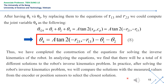In analyzing the equations, we find that there will be a total of four different solutions to the robot's inverse kinematics problem. In practice, after solving the robot's inverse kinematics problem, we will compare the solutions with the measured values from the encoder or position sensors to select the closest solution.